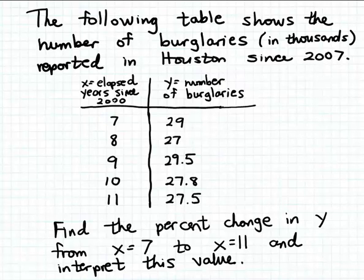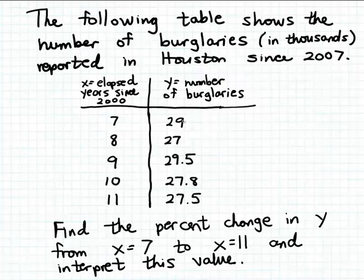The data in the first column, which we're labeling X, is elapsed years since the year 2000. So X equals 7 corresponds to 2007, X equals 8 corresponds to 2008, and so forth. The data in the second column, which we're labeling Y, is the number of burglaries. So 29 means 29,000 burglaries, 27 means 27,000 burglaries, and so forth.